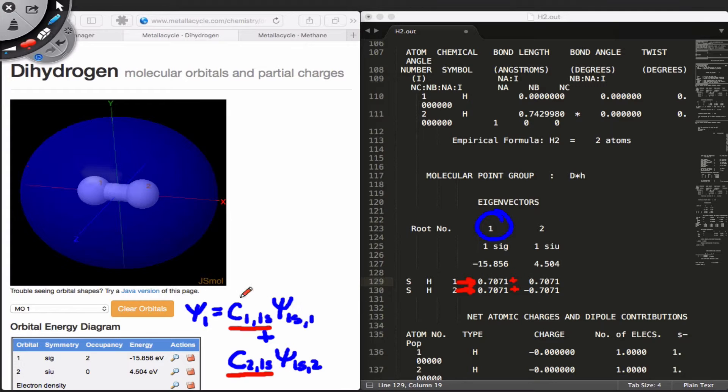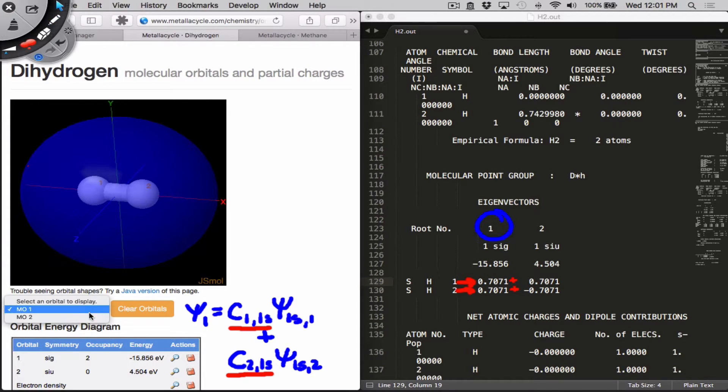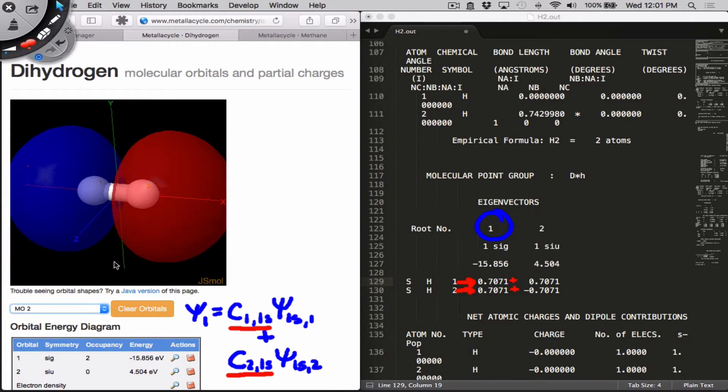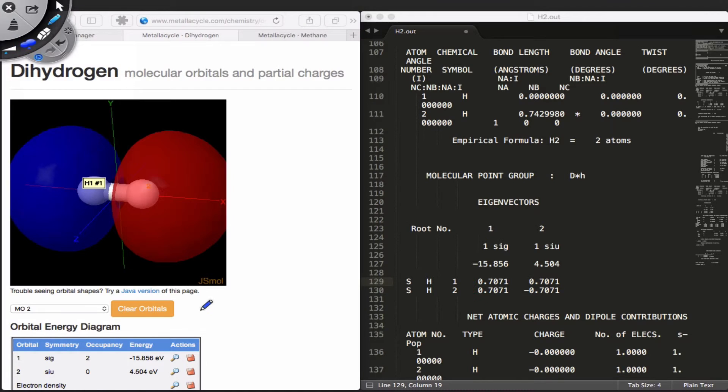If we transition to orbital 2, what we notice is that now we have two lobes of opposite sign in this orbital. We can represent orbital 2 using an equation with similar form, psi 2 is equal to some coefficient on hydrogen 1 for the 1s orbital times that same 1s wave function for hydrogen 1, plus an equivalent term for hydrogen 2, where we include the coefficient for MO2 for hydrogen atom 2 times the 1s wave function on hydrogen atom 2.